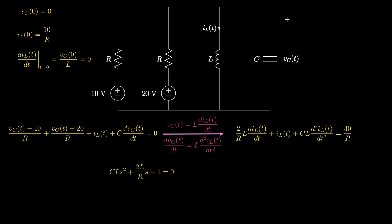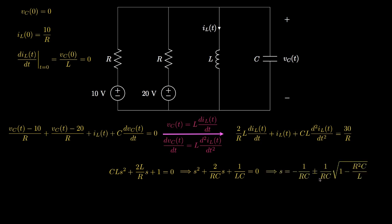To determine how the inductor current transitions from its initial value of 10/R to its final value of 30/R, we begin with the characteristic equation. The coefficient for s squared is the coefficient for the second derivative (CL), the coefficient for s is 2L/R, and the constant coefficient is 1, giving CL·s² + (2L/R)·s + 1 = 0. Dividing by CL gives s² + (2/RC)·s + 1/(LC) = 0. From here we use the quadratic formula to determine the two roots in terms of R, C, and L.